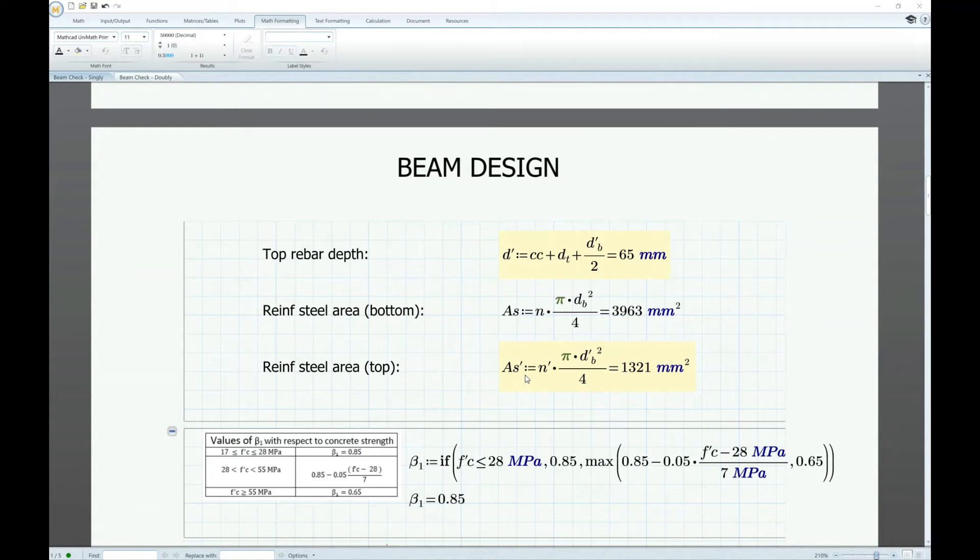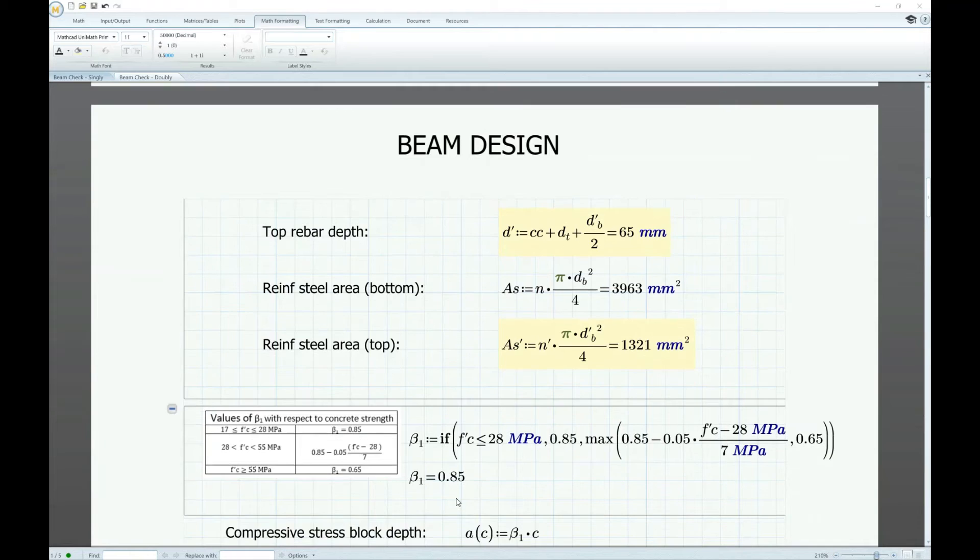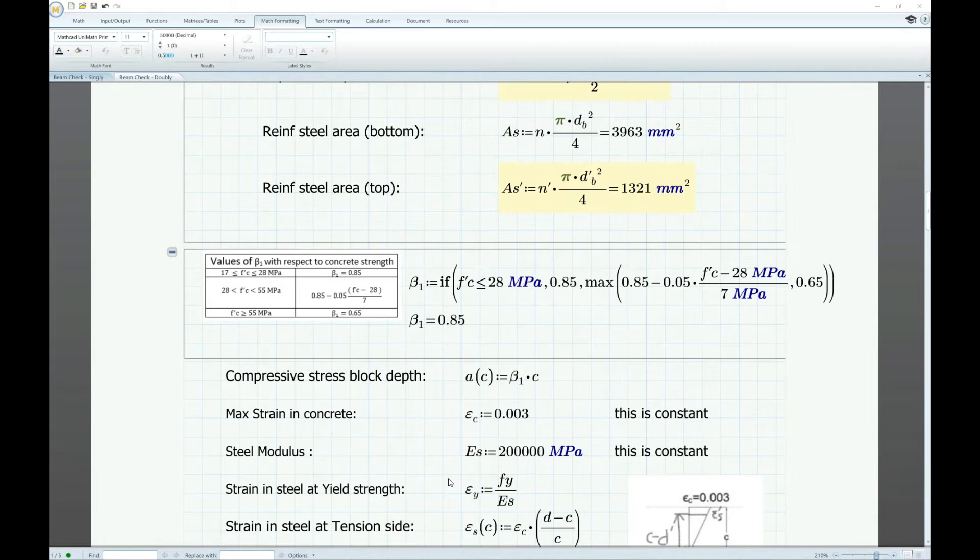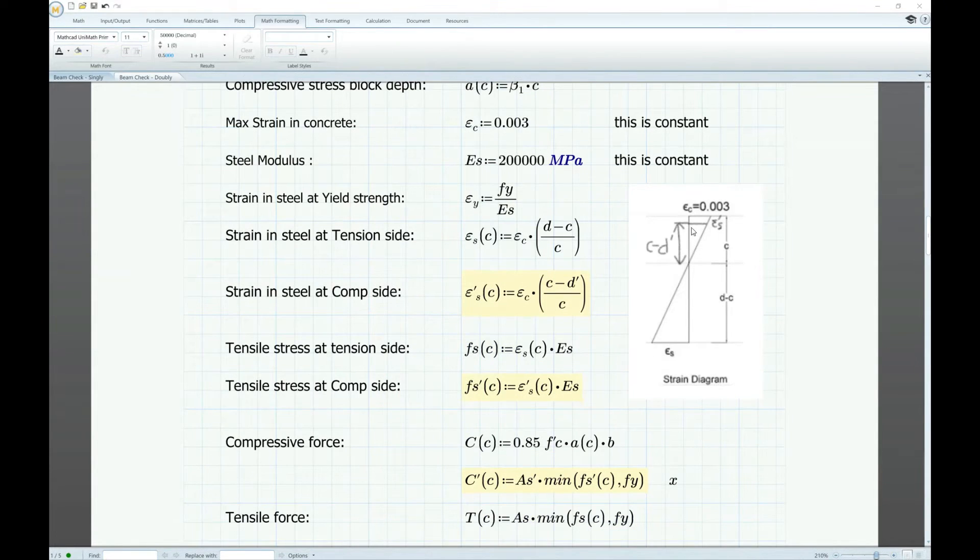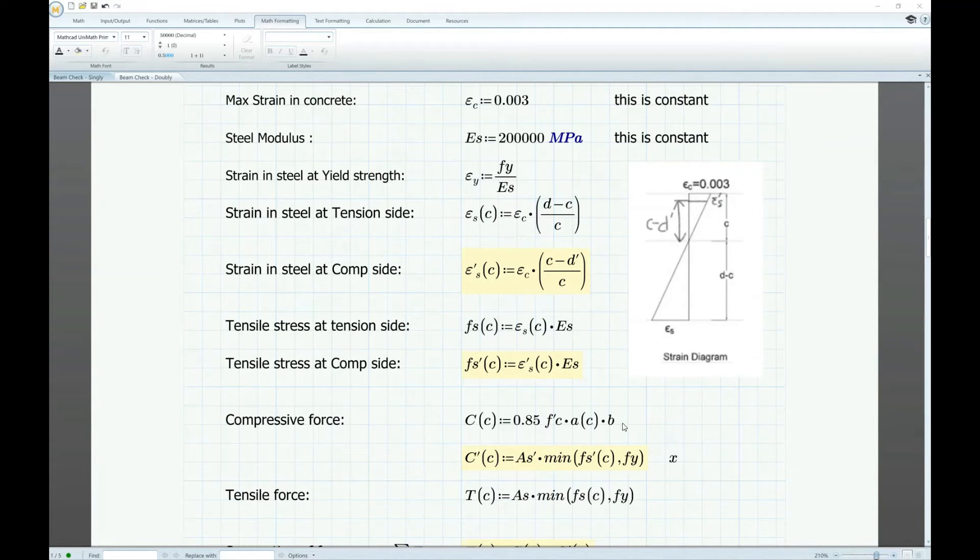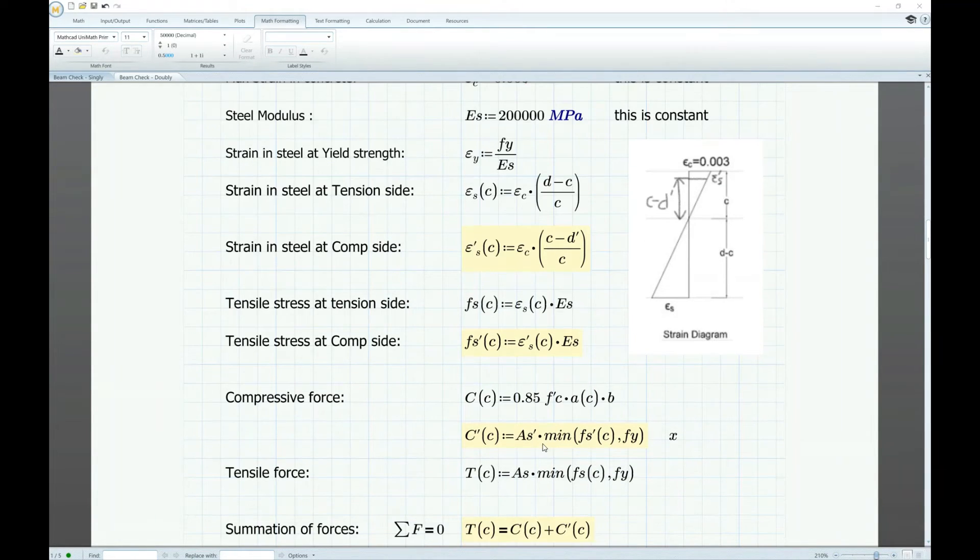So the effective depth is adjusted and we also add the depth of the top bars which is d prime. We also add the area of reinforcement at the top and this is also adjusted because of the additional rebars at the bottom. The value of beta one is unchanged and for the strain we add epsilon prime which is a distance C minus d prime. If we take the ratio and proportion we get this equation. We also add fs prime and we also have the additional compression force.